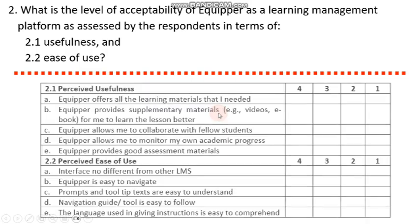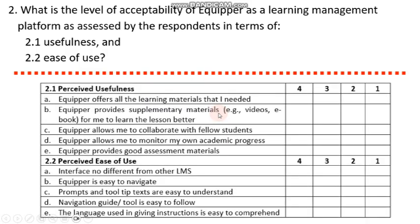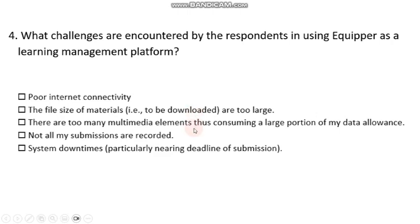For the level of acceptability, perceived usefulness has five indicators — A, B, C, D, E — and for perceived ease of use, we also have five indicators. These are to be rated based on a 4-point scale: 4, 3, 2, 1, using the level of agreement — strongly agree for 4, agree for 3, slightly agree for 2, and disagree for 1. For the challenges, we have multiple responses with five options.